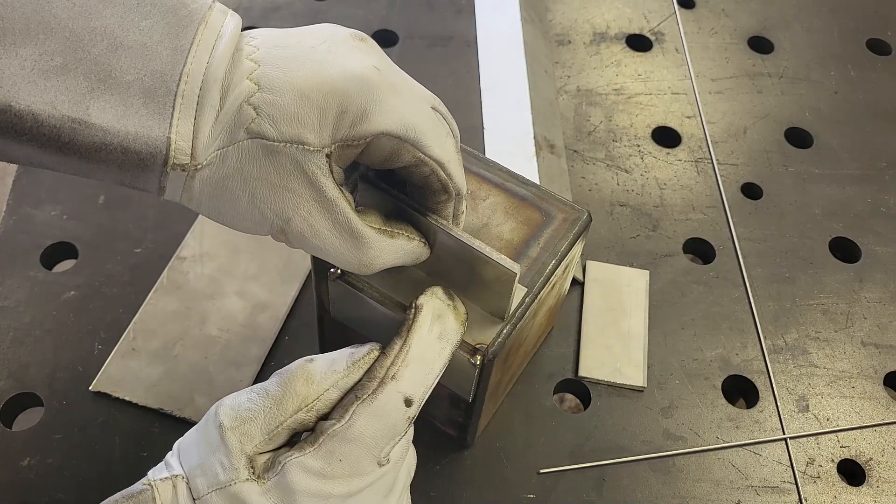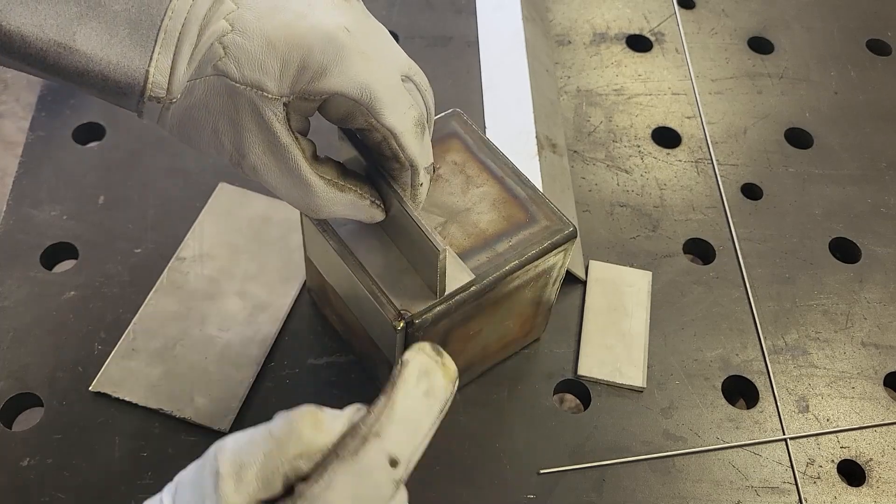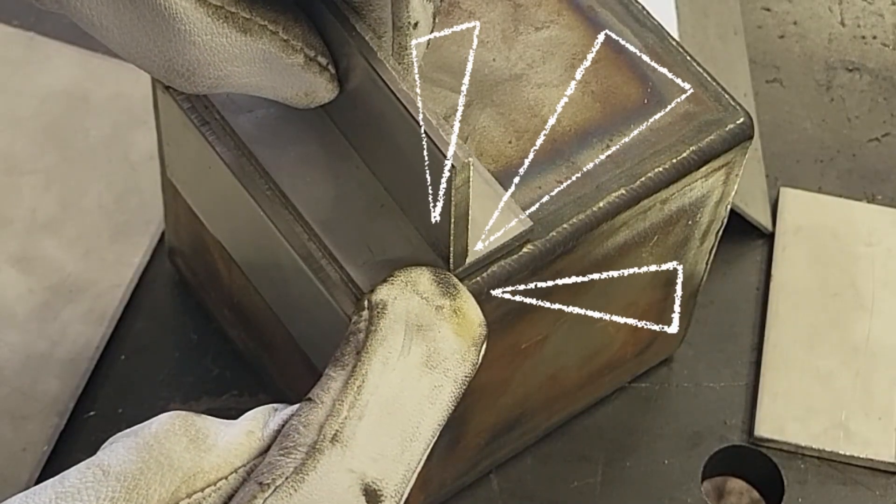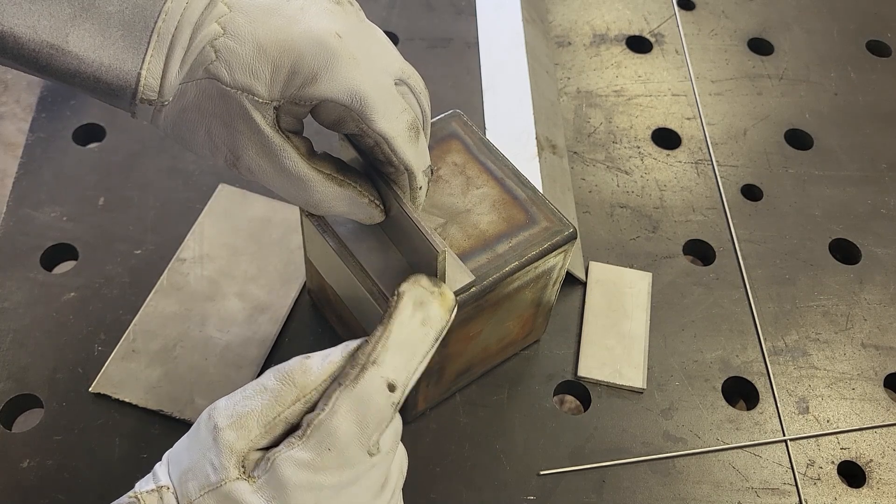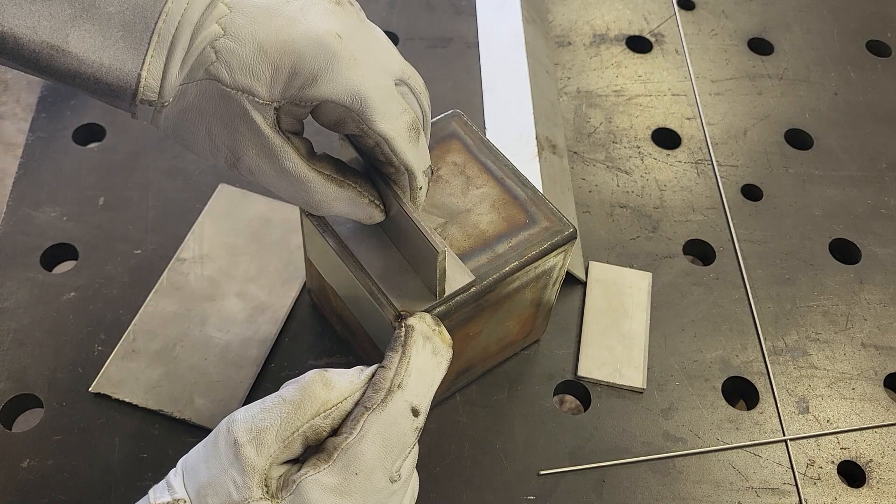Next up is the T-joint, and I'll just be holding this material with one hand, and then pointing the electrode right here at the corner. And then I will harvest some of the material from this plate right here, and drag it down into the bottom plate.